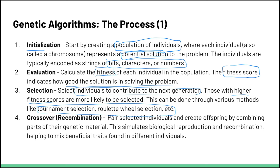Once you've selected those fit individuals, the next step is to pair selected individuals and create offspring by combining parts of their genetic material. The genetic material might be bits, characters, etc., combining traits of both strings — both collections of information — to get something that is hopefully better than both of them. This basically simulates biological reproduction, where we combine the chromosomes of two individuals with the hope of mixing beneficial traits.